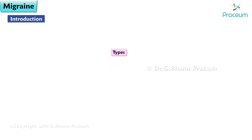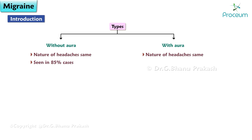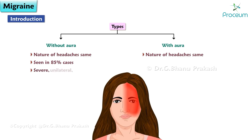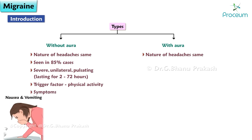There are two main types of migraine: migraine without aura and migraine with aura. The nature of headaches in both types is similar. Migraine without aura is seen in about 85% of cases — it is a severe unilateral pulsating headache lasting 2 to 72 hours. The triggering factor is physical activity.